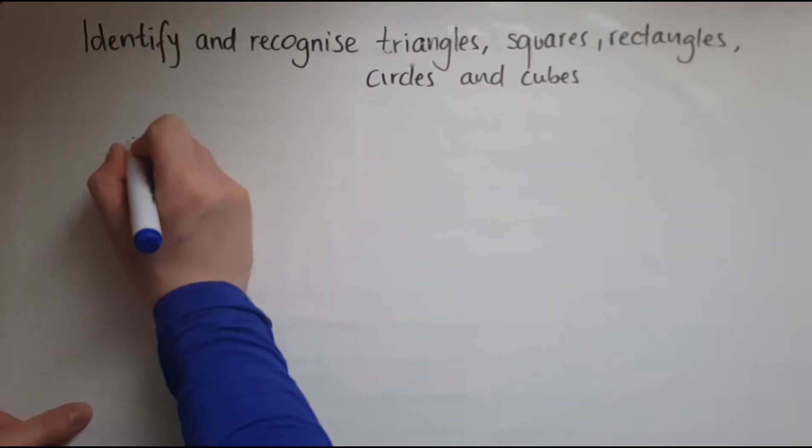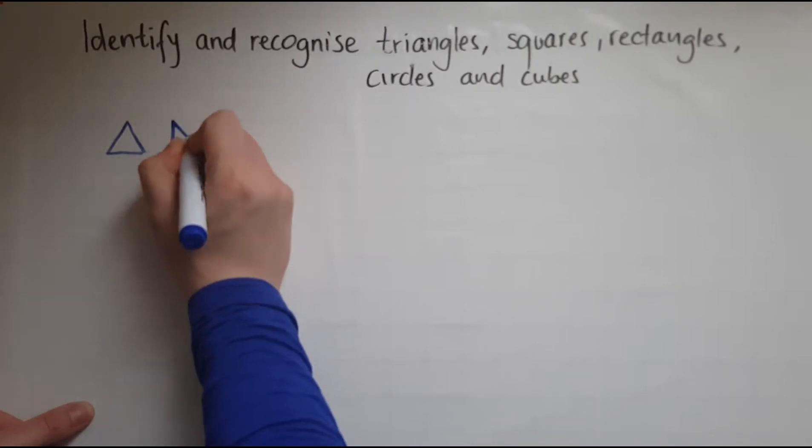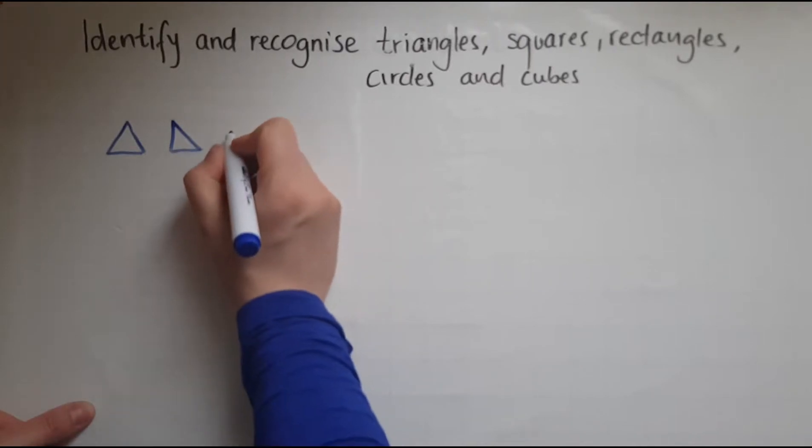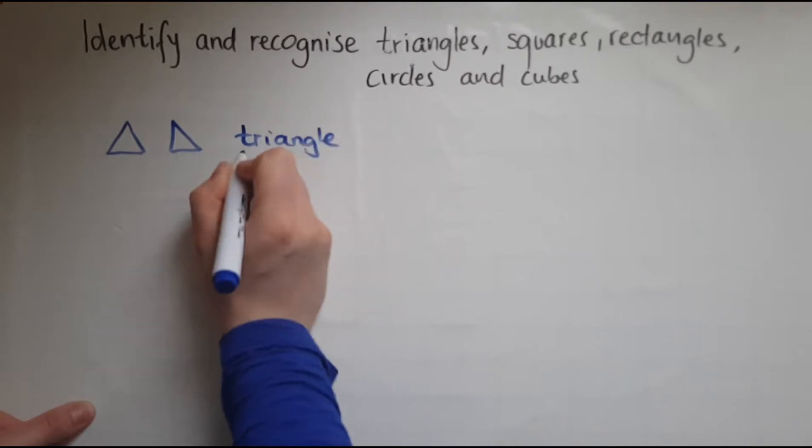So we'll draw a triangle here, but it can look like this, as long as it has three sides. So triangle, the key word is three.